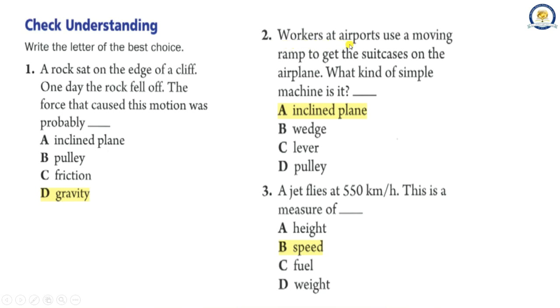2. Workers at airports use a moving ramp to get the suitcases on the airplane. What kind of simple machine is it? A. Incline plane B. Wedge C. Lever D. Pulley. The correct answer is A, Incline plane.